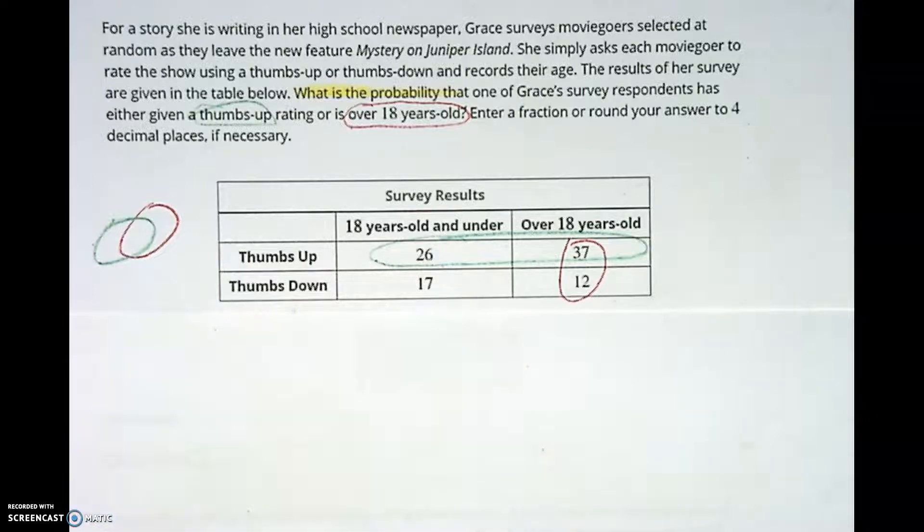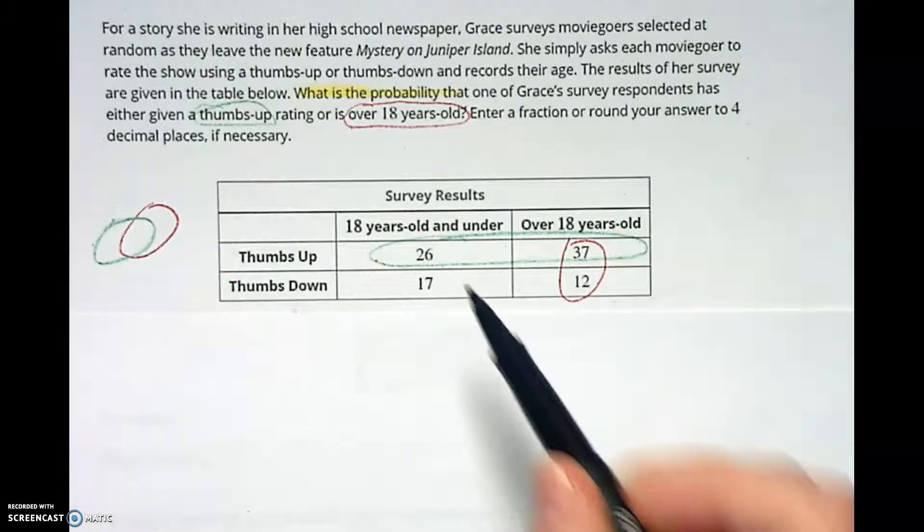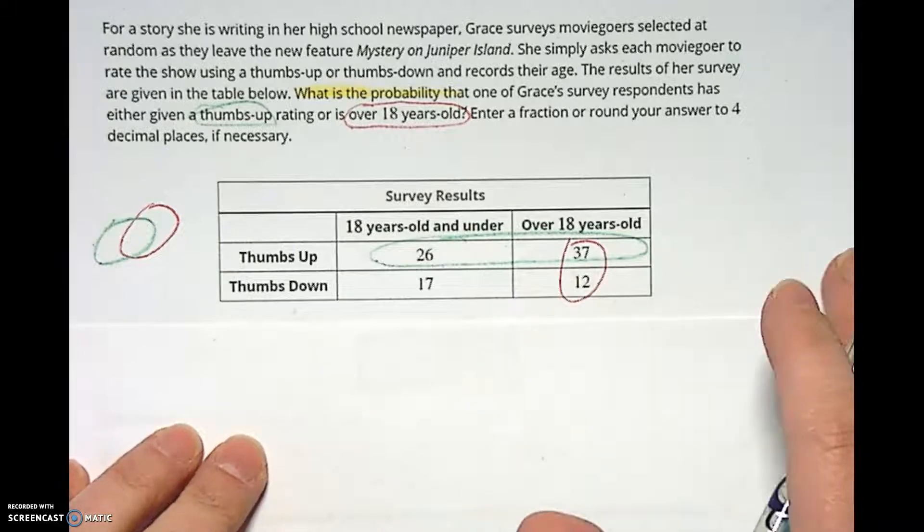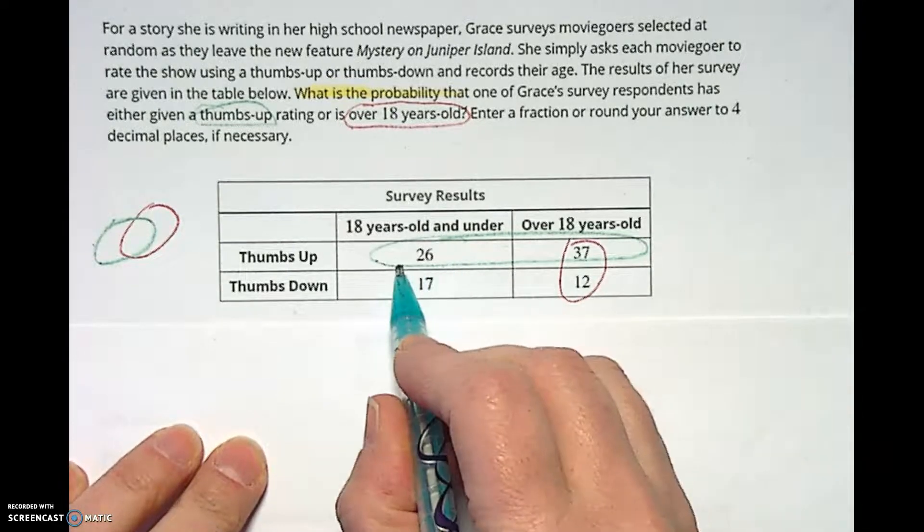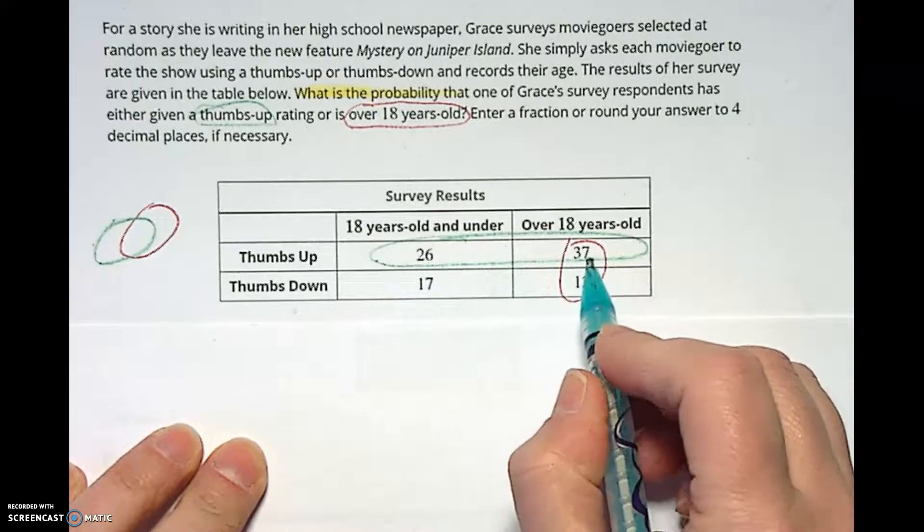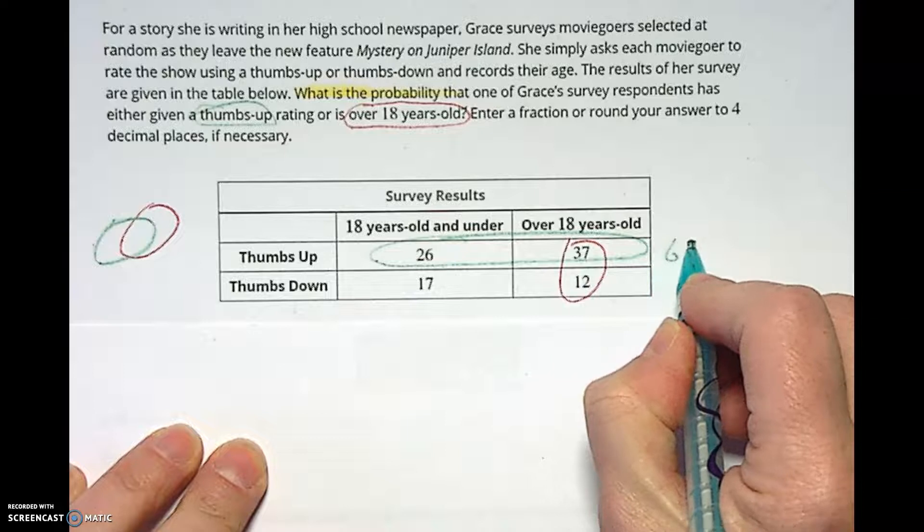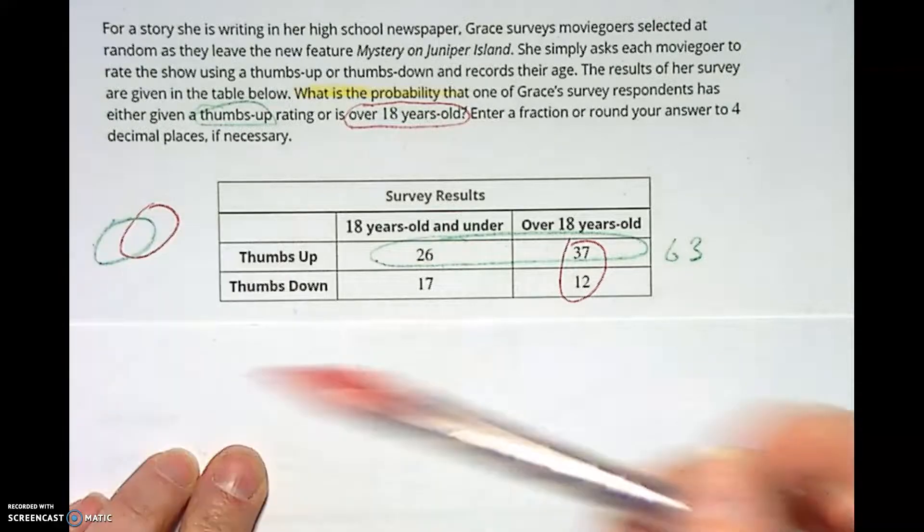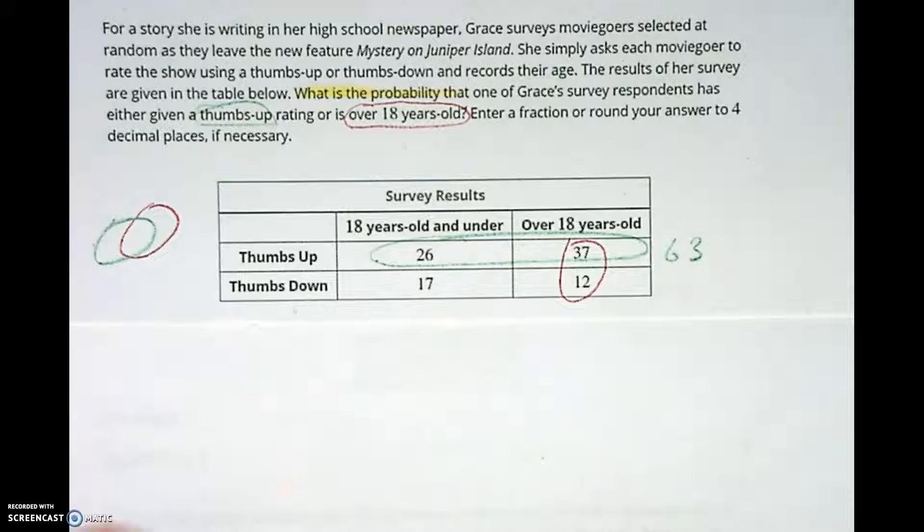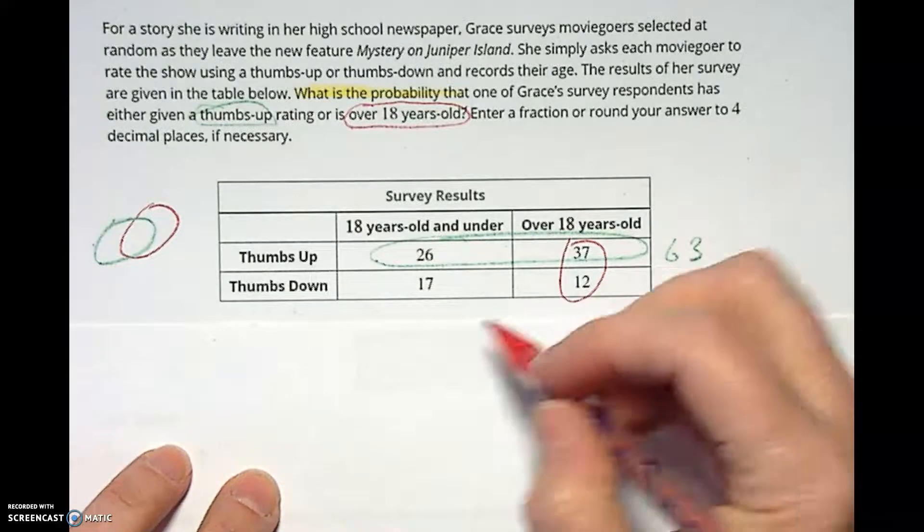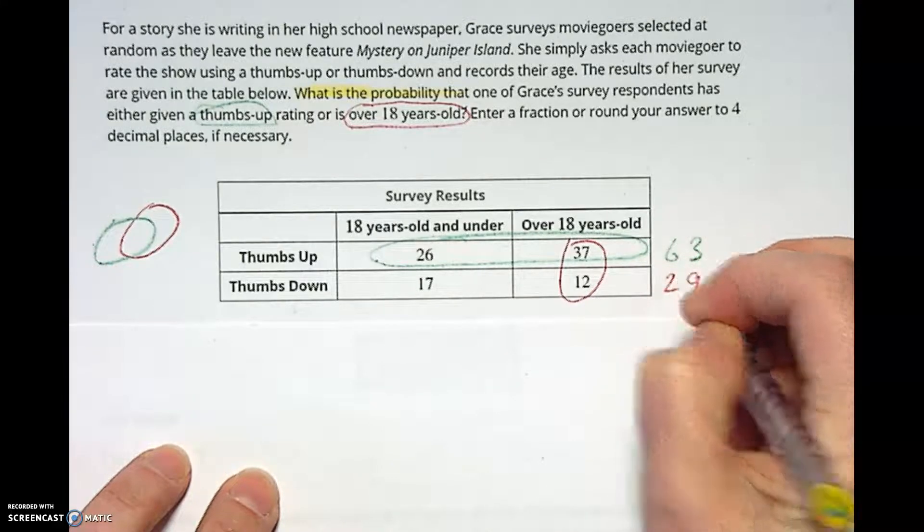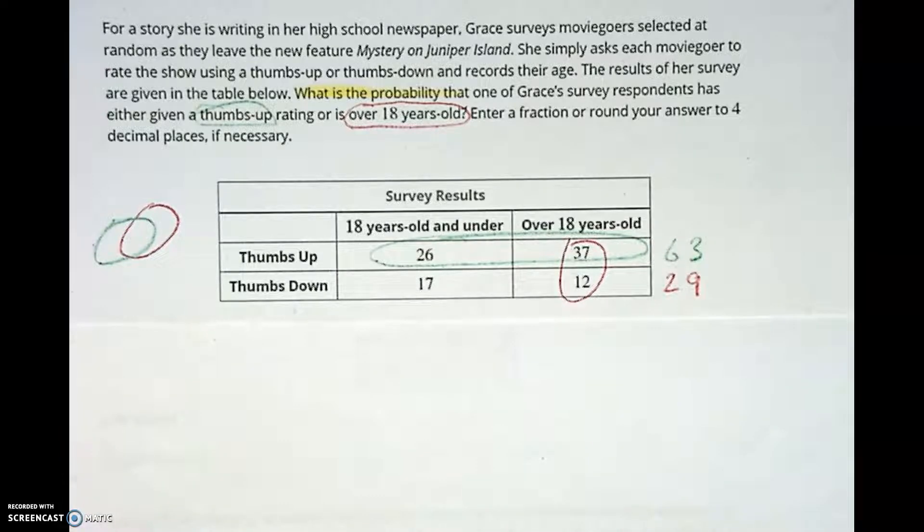So let's first add things up. Whenever I get a table like this I try to add up all the different stuff and make sure everything works. First I'm going to add up all the thumbs up people which was 26 plus 37 which gave me 63. And then I'm going to see how many thumbs down people there were, which is the 17 and 12, which means the movie was probably fairly good. 17 plus 12 is 29.